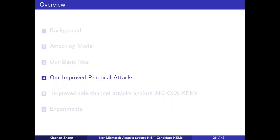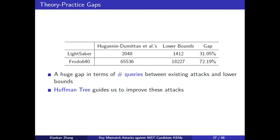In the fourth part, we propose our improved practical attacks. We need to point that for some KEMs, there is still a huge gap between existing attacks and lower bounds, such as LightSaber and Frodo640. The gap is 31.05% and 72.19% respectively. In the following part, we will show how to use the Huffman tree to guide us to improve these attacks.